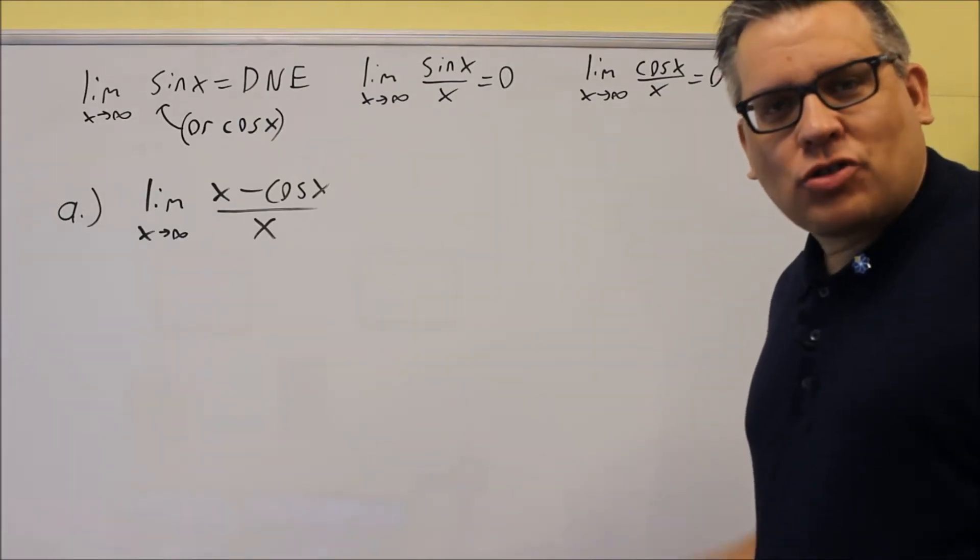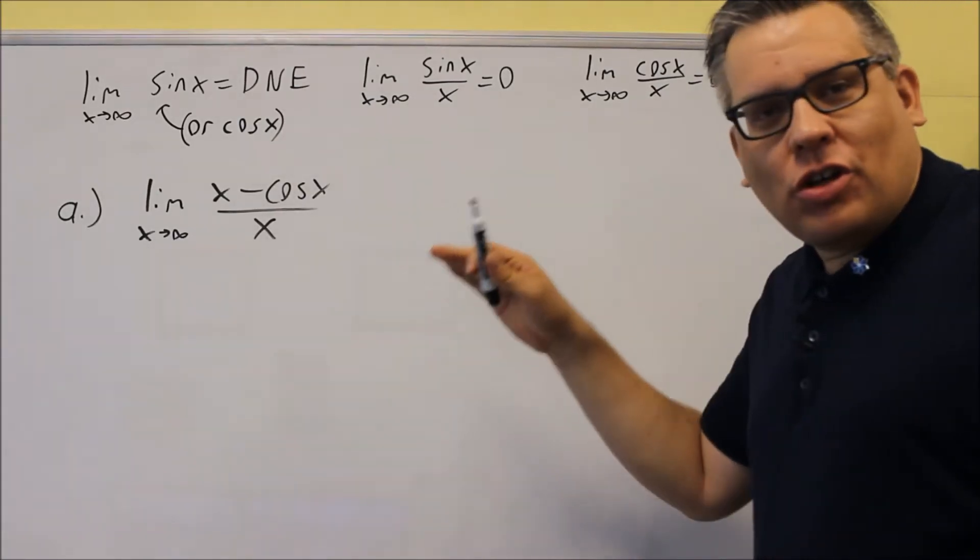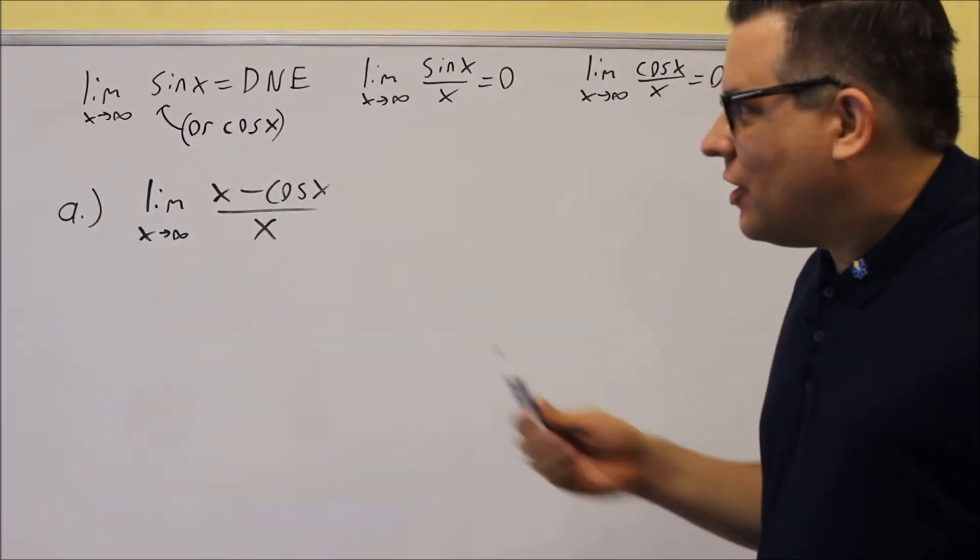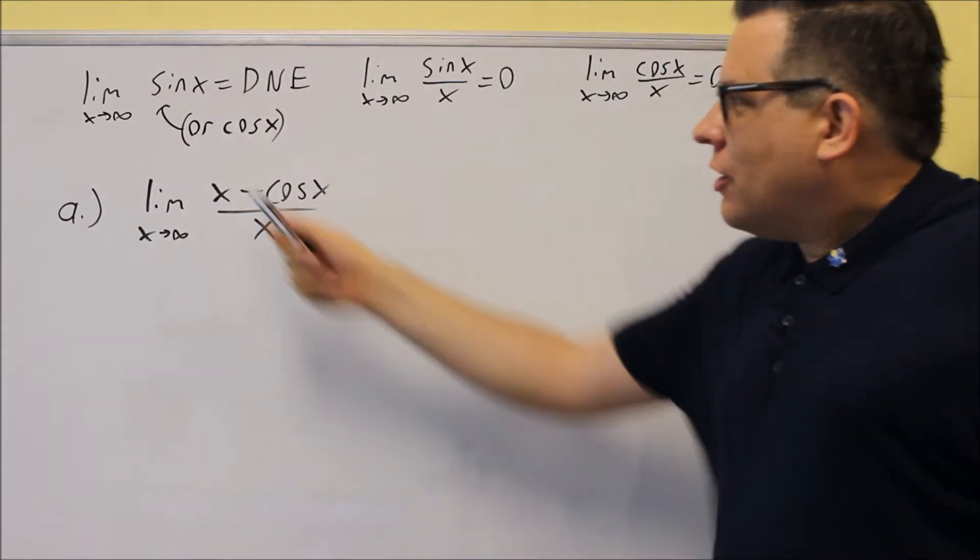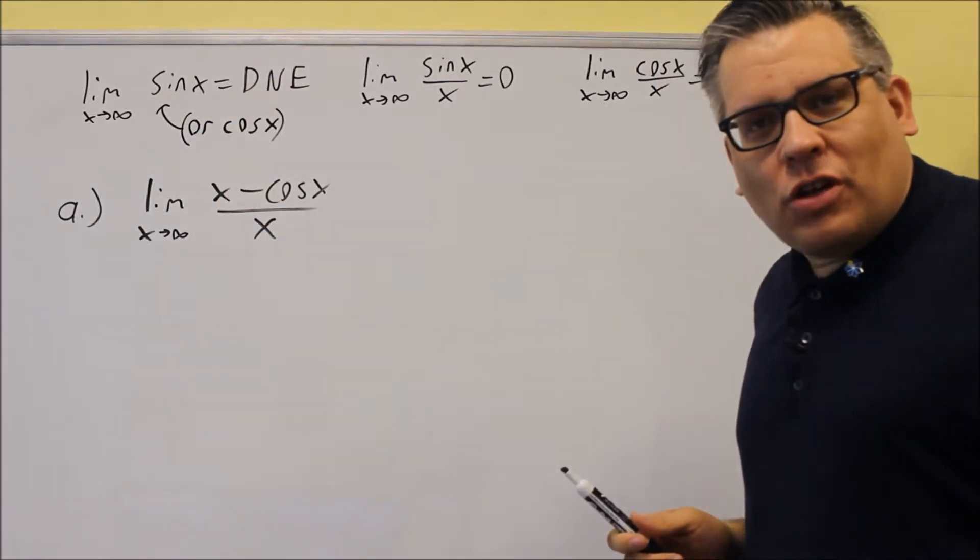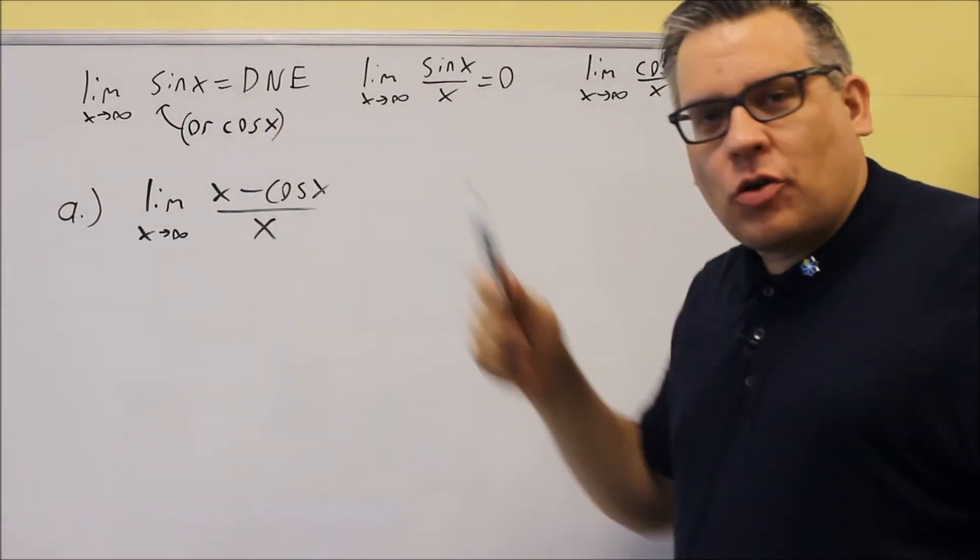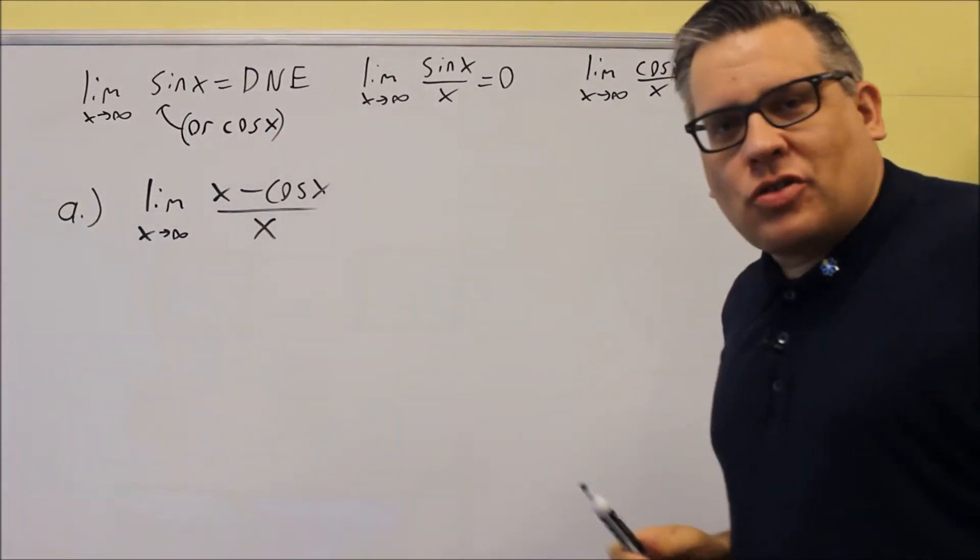Okay, so now we're going to go over some special limits at infinity that involve trig functions. So here's the first one. Limit as x approaches infinity, I can have sine or cosine in there. That limit does not exist.